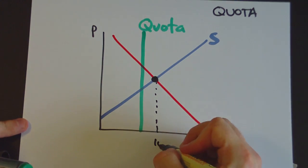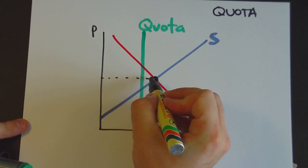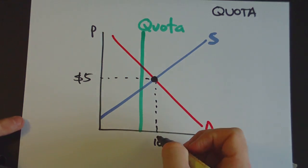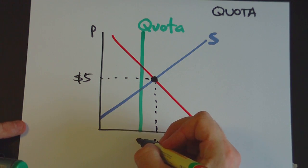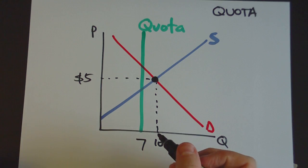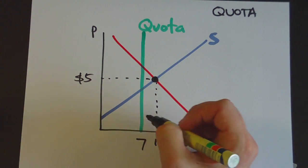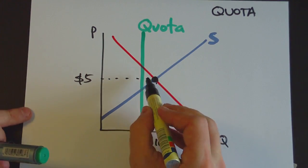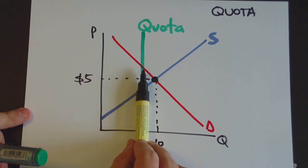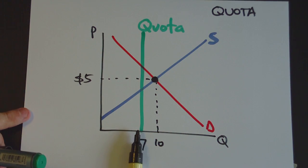Ordinarily we've been using an equilibrium price and quantity of $5 and 10 units, so let's assume that this quota is roughly sitting at about 7 units. In other words, suppliers and sellers would like to supply 10 units to the market, but the regulator restricts the amount they can actually supply to 7.